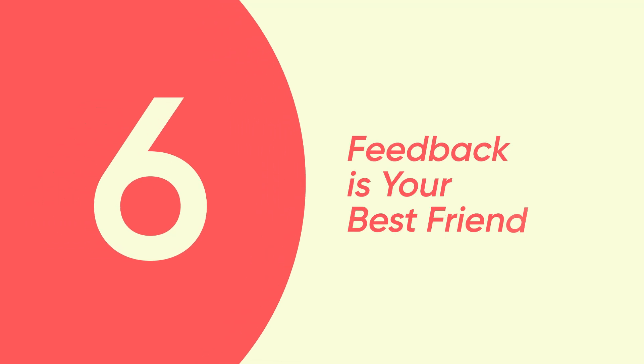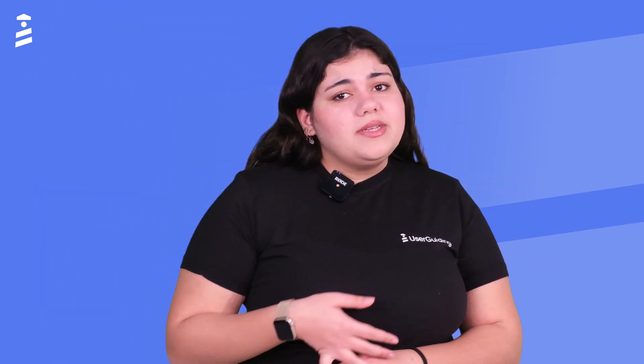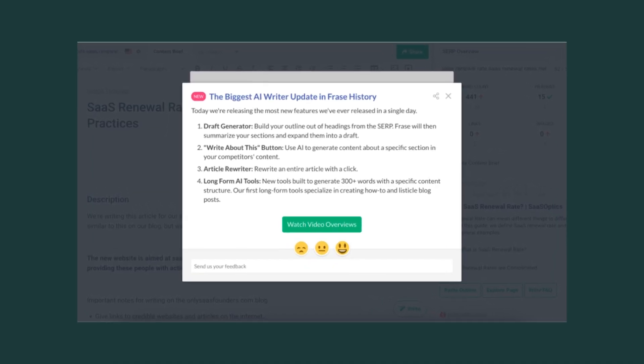Six: feedback is your best friend. It's the secret to any successful in-app tutorial. You might think everything's all right, but there's always room for improvement — and who better to tell you than your users themselves? Regularly nudge them for feedback: NPS surveys, quick forms, you name it. Not only does it show that you care, but you also get golden insights straight from the people whose opinions matter most. Phrase, for example, has the feedback game down to a science.